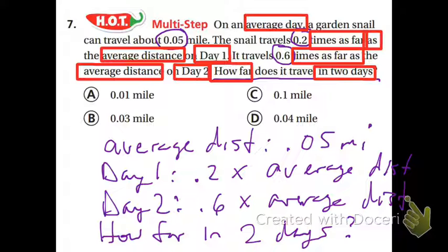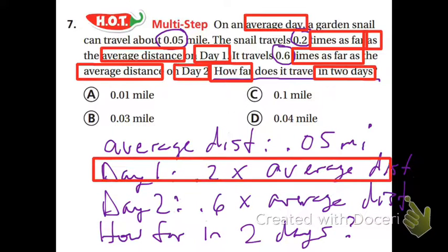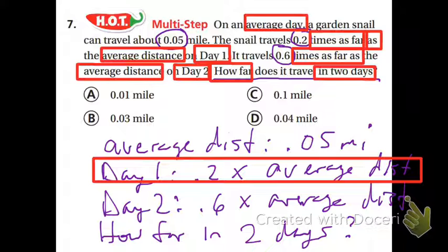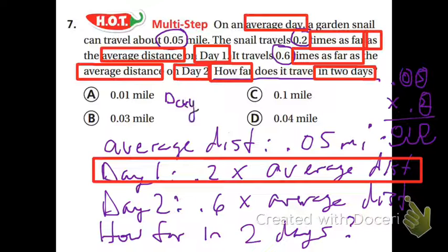So I've just made this problem much simpler. If the average distance is 0.05 of a mile, day one is 0.2 times that. Day two, the snail travels 0.6 times that. How far did he travel in two days? So first thing I need to do is solve this part. 0.2 times the average distance. So I have the average distance is 0.05. And I multiply that by 0.2. So five times two is ten. And there are three digits after my decimal. So I put my pencil at the end and I go one, two, three. And then I fill that space with a zero. So day one, the snail traveled 0.01 miles.